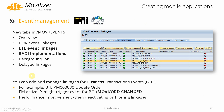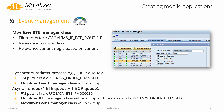The event management transaction was extended so it can now be used to configure business transaction event linkages directly and also manage body implementations. We also added the feature to have a relevance routine for BTE events. Using this, you can more easily filter BTE events that are not required in your scenario, so the connector will process fewer events, which will increase the performance.